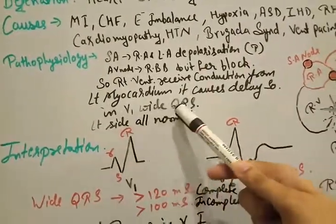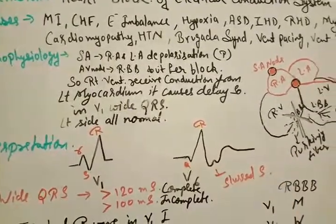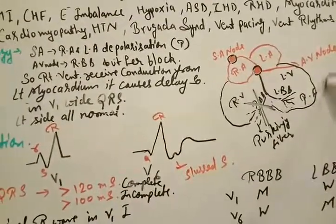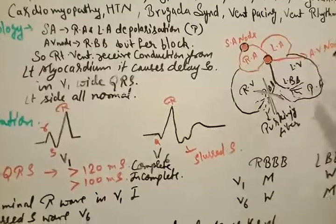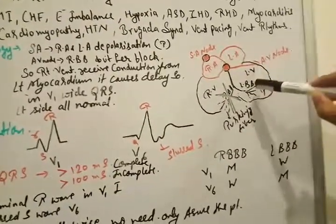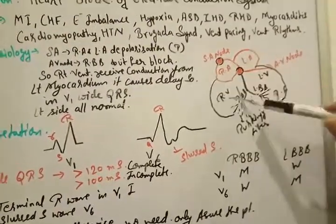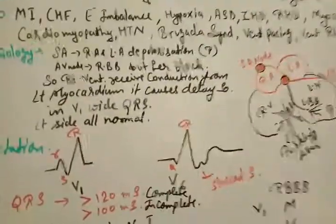So in V1 there is a wide QRS complex due to right ventricle. And left side all is normal because there is no block in left bundle. But right bundle there is a block, so the myocardium of left ventricle supplies the conduction to the right ventricle and it causes delay. That's why there is a widening of QRS.